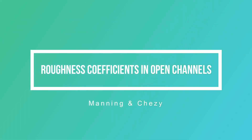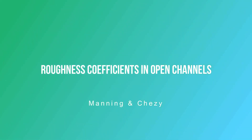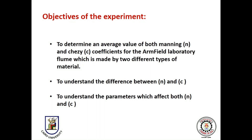This video explains the roughness coefficients in open channels. The objective of this experiment is to determine an average value of both Manning's N and Chezy's C coefficients for the Armfield laboratory flume, which is made of two different types of material. The experiment also aims to understand the difference between N and C, and the parameters which affect both.